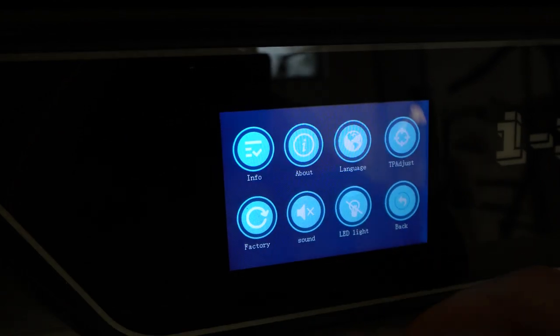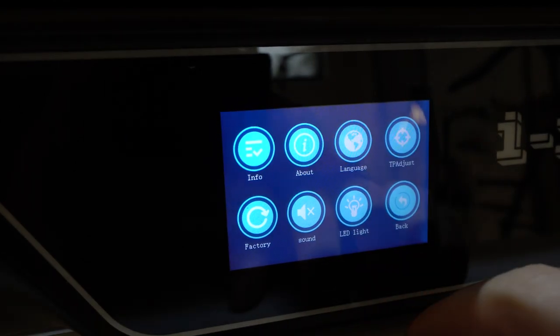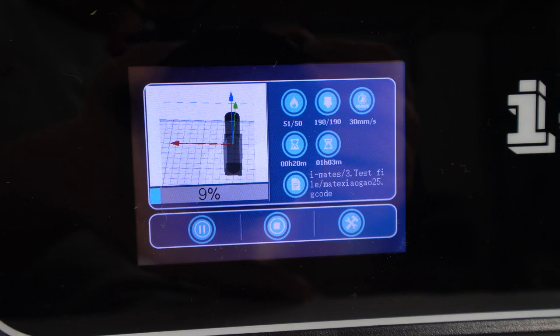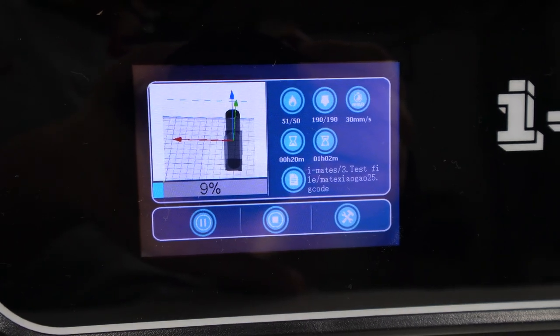For example, while you print you can turn on or off enclosure light. And before each print you can see the small preview of the model which is nice.